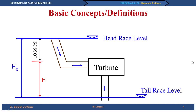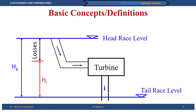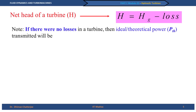The difference between the two is accounted for by the losses. Whenever we discuss the head utilized by the turbine, unless specifically mentioned, we always refer to the net head H. Thus we can say that net head H equals H_G minus losses. And if we assume an idealized machine with no losses, the theoretical power transmitted is P_theoretical = ρ V̇ g H.